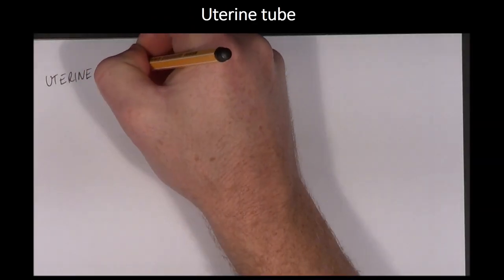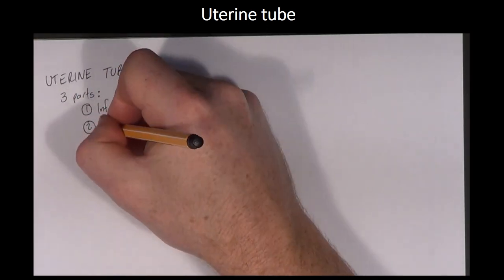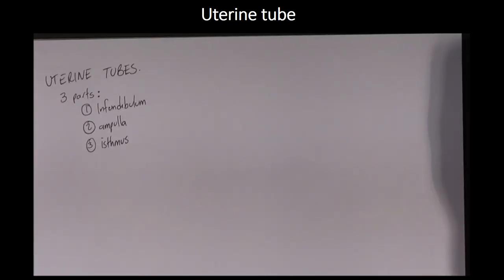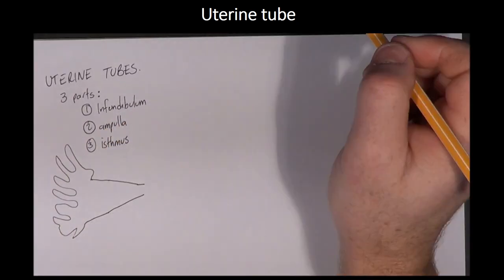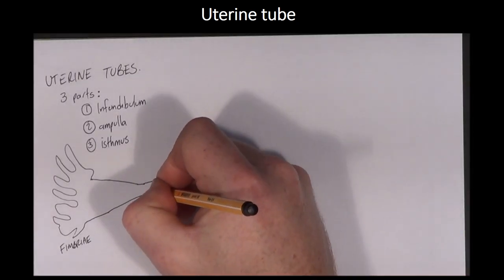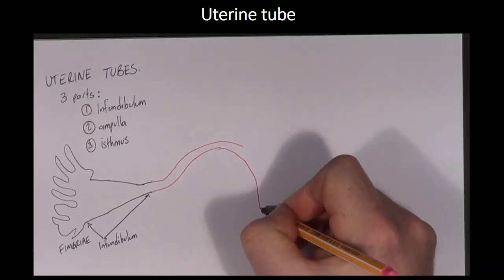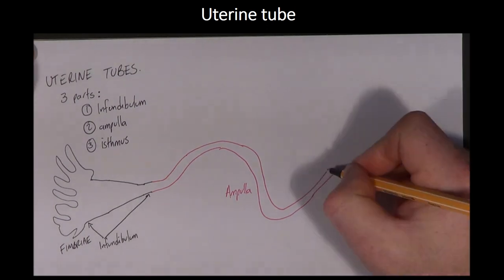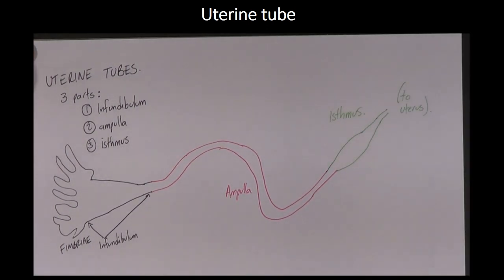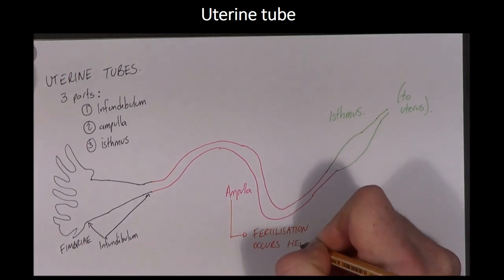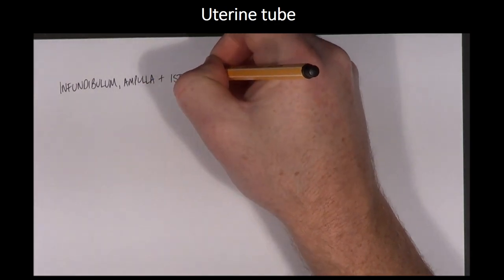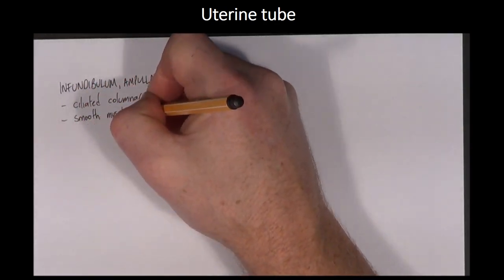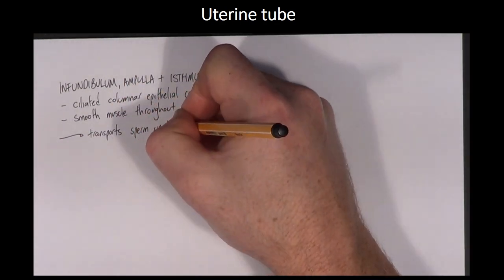The uterine tubes are also known as the fallopian tubes; some texts refer to them as oviducts, though this term is more correctly applied to oviparous species like birds and reptiles. There are three main segments: the infundibulum, the ampulla, and the isthmus. The infundibulum is shaped like a funnel and has finger-like projections called fimbriae which pick up the oocyte at ovulation. The ampulla is the site of fertilization where the zygote is formed, and the isthmus moves the developing embryo towards the uterus. There are ciliated columnar epithelial cells throughout the uterine tubes as well as smooth muscle.